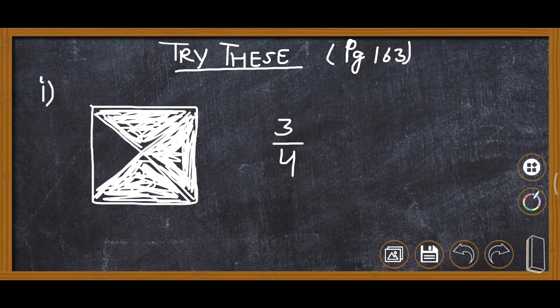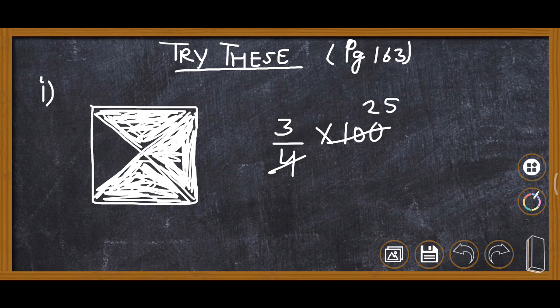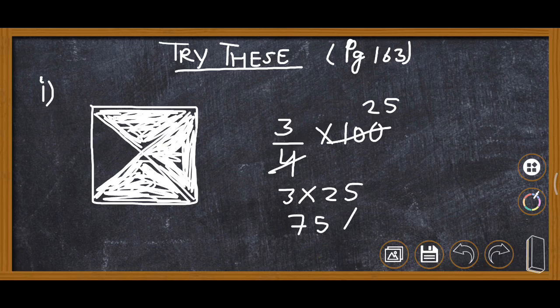For finding the percentage of 3 upon 4, we multiply it by 100. Cut 100 by 4, it is 25. Now 3 multiplied by 25: 25 threes are 75. So the answer is 75 percent.